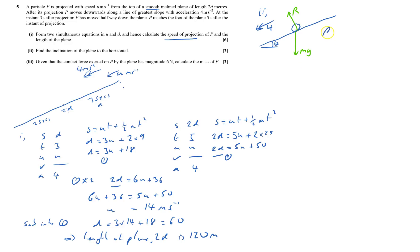So I'm going to resolve down the slope, and that will be resultant force equals mass times acceleration. The only force I've got is the weight, so that'll be mg sin theta, equals the mass, which is m times acceleration, which is 4.